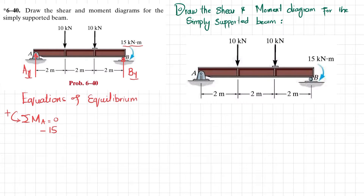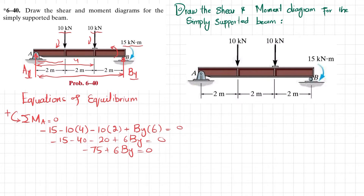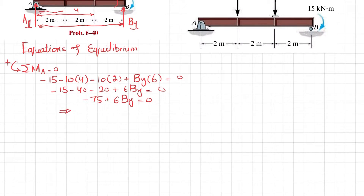Writing out the equation: minus 15 (external moment, clockwise) minus 10 into 4 minus 10 into 2 plus 6·B_y equals zero. So minus 15 minus 40 minus 20 plus 6·B_y equals zero, giving minus 75 plus 6·B_y equals zero. Therefore B_y equals 75 divided by 6, which is 12.5 kilonewtons.